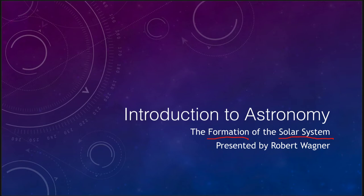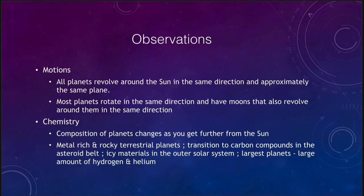We want to start out by looking at what some of the observations are that can help us understand our solar system. We can look at a couple of different things: the motions and the chemistry of the solar system. Both are important for understanding how our solar system formed in the first place.